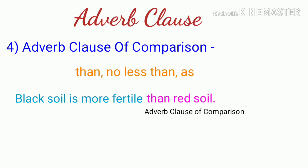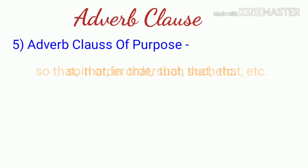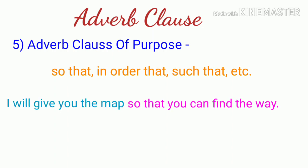The next type is adverb clause of purpose - the clause that shows the purpose or hetu of the action described in the main clause. For example: 'I will give you a map' - 'I will give you a map' is the main clause, and 'so that you can find the way' shows the purpose - meaning 'I will give you a map so that you can find it.'